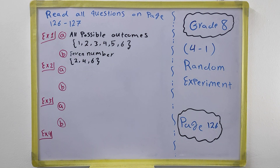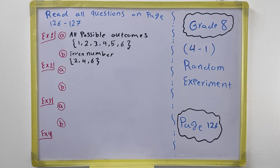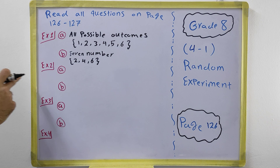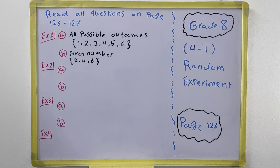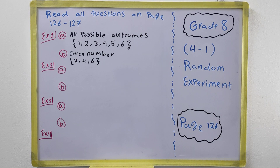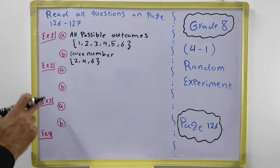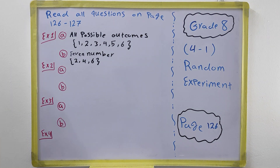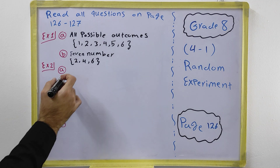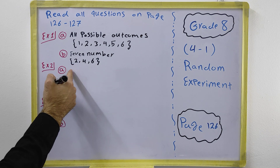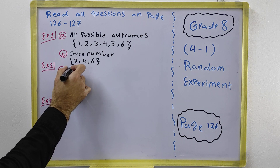In Example 2, it is about a compound random experiment. A compound random experiment means we have two experiments happening at the same time. The question tells you a player threw two coins. This example asks you to list all possible outcomes when throwing two coins.